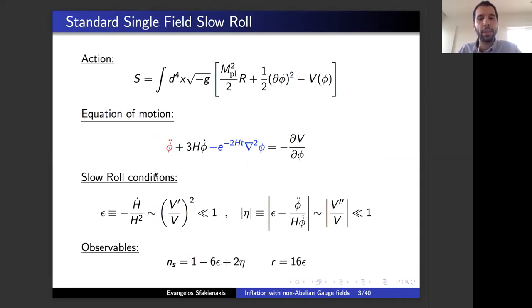The workhorse of inflation is a very simple model of a single scalar field rolling down a potential. The ingredients are just Einstein gravity and canonical kinetic term and a potential, with the Klein-Gordon equation. You can neglect the second derivative and that gives you the slow roll equations of motion. So epsilon and eta are the two quantities that define the slow roll equations, which means if epsilon and eta are much smaller than one, you can get rid of the second derivative of the velocity.